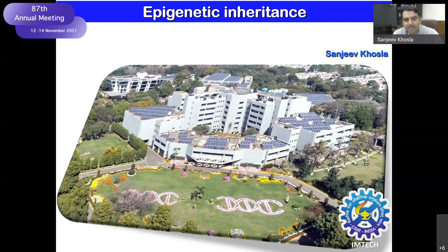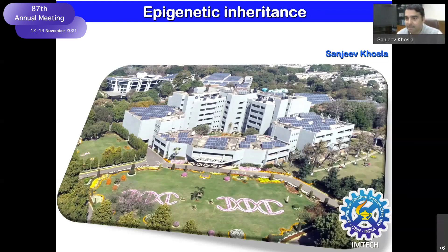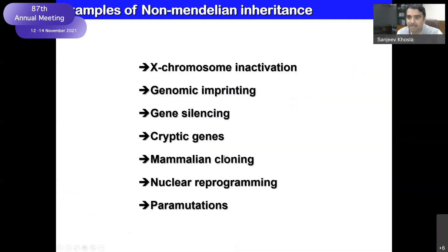When we talk of inheritance, what we normally mean is transmission of genetic information from one generation to another — and by genetic information, we mean DNA. Along with what are called Mendelian laws of inheritance, which were formulated in the mid-1800s, these form the basic tenets of inheritance as we know it. But over the last several decades, more and more examples have come forward showing not only inheritance of non-genetic information, but also non-Mendelian inheritance.